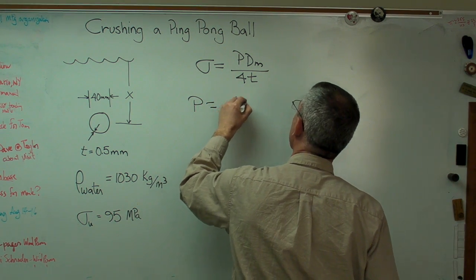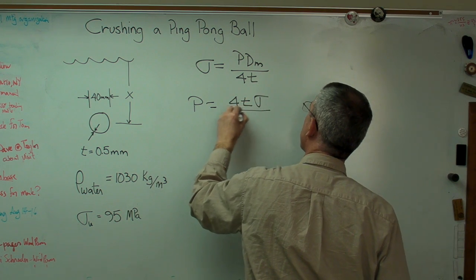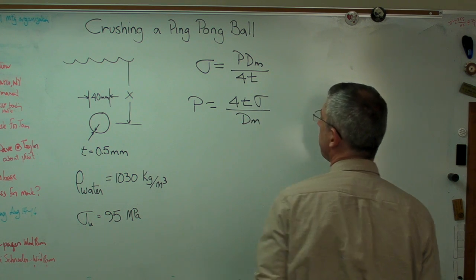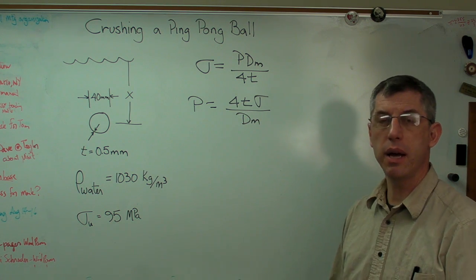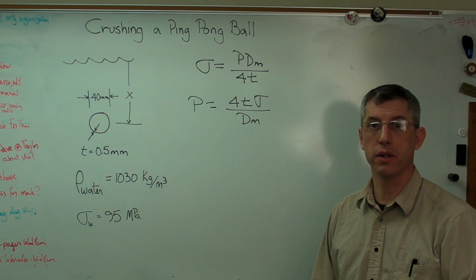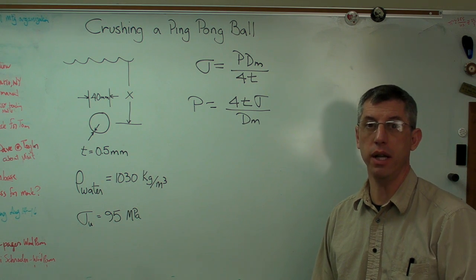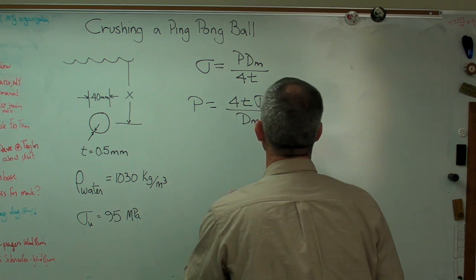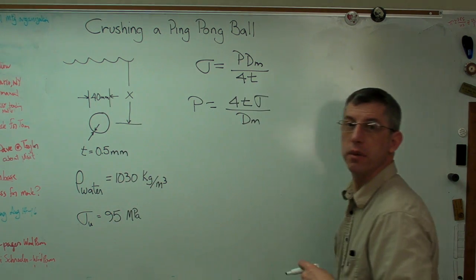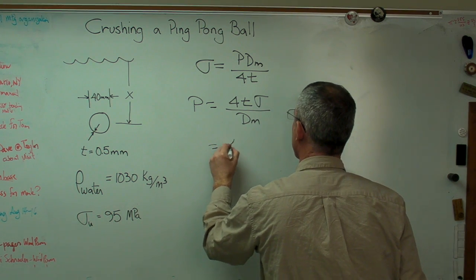So we'll get pressure equals 4 times the thickness times the stress over the mean diameter. Now our mean diameter is the outside diameter minus one wall thickness, not two wall thicknesses. If you subtract two wall thicknesses, you're going to get the inside diameter. So my mean diameter is going to be 40 millimeters minus half a millimeter, 39.5 millimeters.